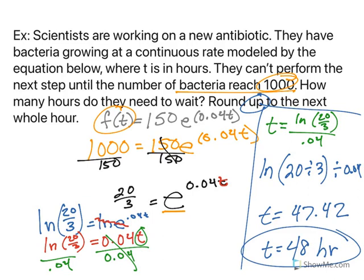Rounding up to the next whole hour, we end up with 48 hours. This is where we think about what does this problem mean. If they need a thousand bacteria, if we round down to 47 hours they're going to be short. You have to make sure you understand the context of these real life story problems, because that's going to change how you round. You might have to round up to make sure we have the appropriate number of bacteria.